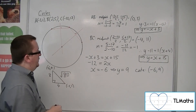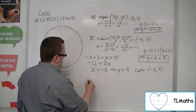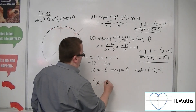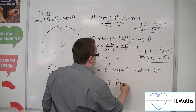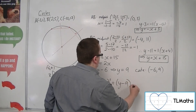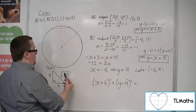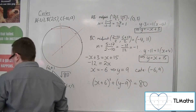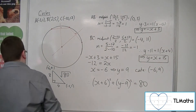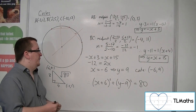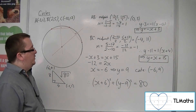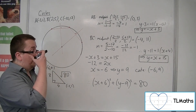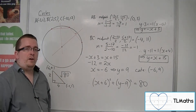That means the equation of the circle is (x plus 6) squared plus (y minus 9) squared equals r squared, so equals 80. That is how you can work out the equation of a circle given three points that lie on it.